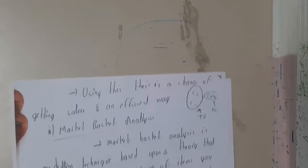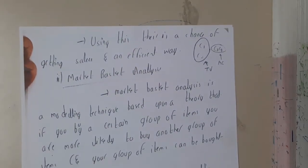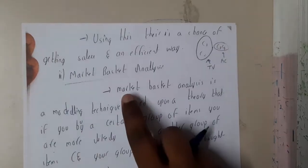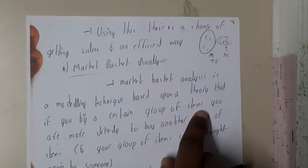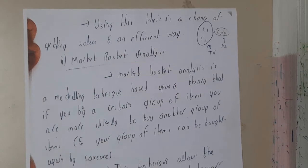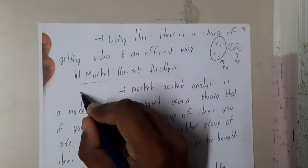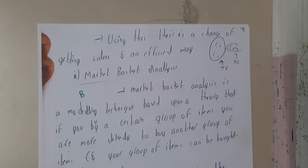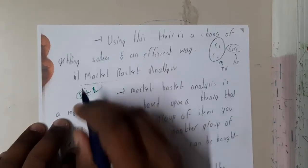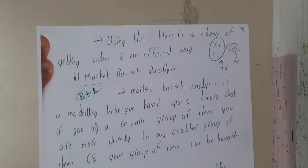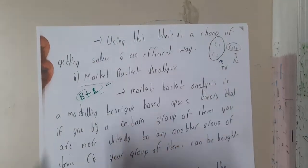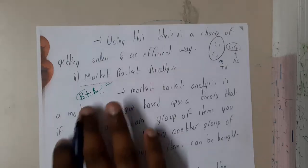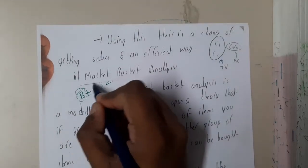The next application is market basket analysis. We discussed this already in the frequent patterns section. Market basket analysis is a modeling technique based on the theory that if you buy a certain group of items, you are more likely to buy another group of items. For example, assume you went to a shopping mall to buy bread with no thought of buying anything extra, but then you saw butter and instantly thought to buy both for breakfast. This is market basket analysis — the shop owner assumed that most customers buying bread could also buy butter.